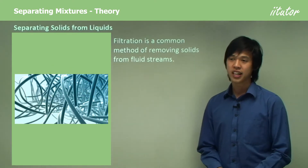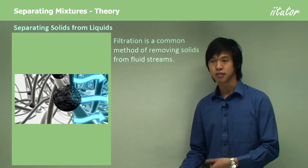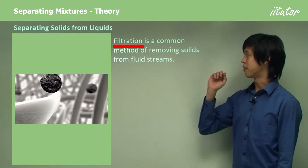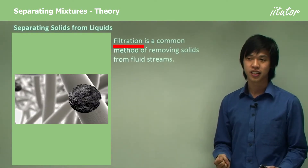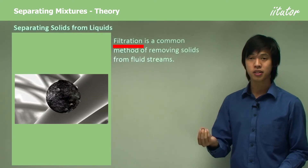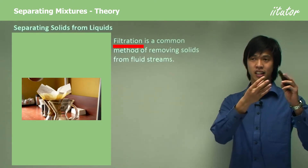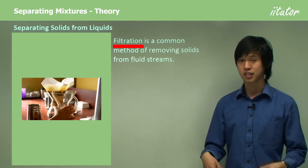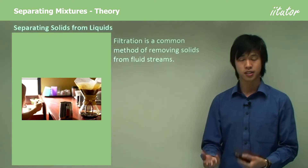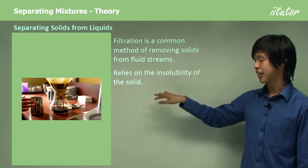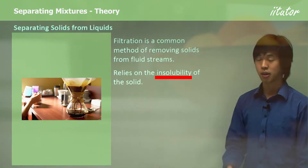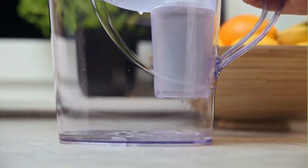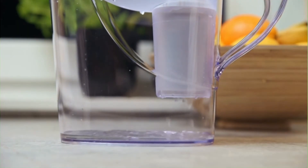We rarely see many examples of separating solids from solids, but now we have separating solid from liquid — and this is quite easy. Filtration is a common method for removing solids from fluid streams. You're relying on the particle being insoluble in the liquid, and then letting the liquid pass through the filter while the solid gets stuck. Similar to sieving, except one of the substances is now liquid. The property we're exploiting is that the solid is insoluble in the liquid.